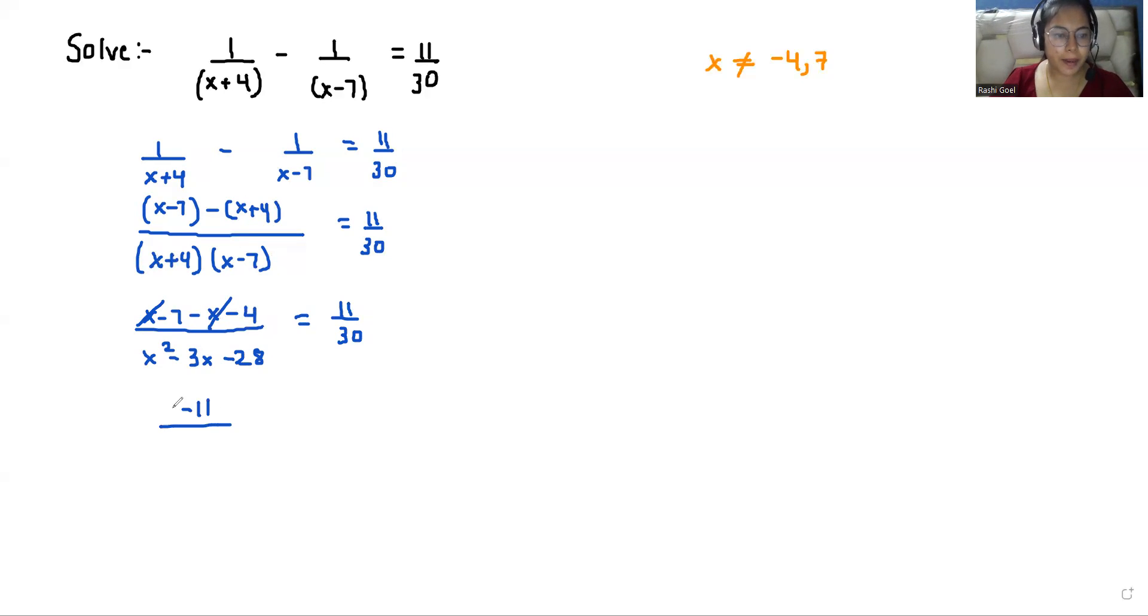So as you can see, in both the sides, the numerators are equal. So we divide both sides by 11. On dividing both sides by 11, we can write it as -1 over (x² - 3x - 28) equals 1 by 30.